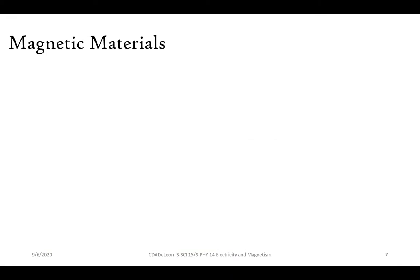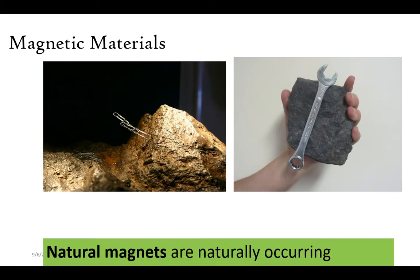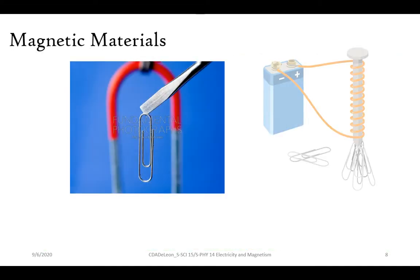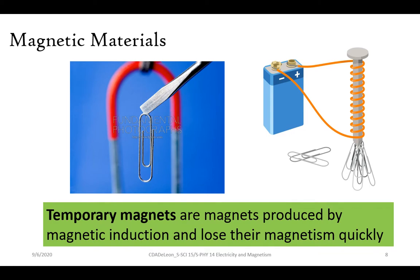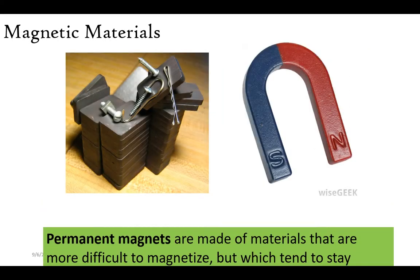We have different types of magnetic materials. First are natural magnets — they are naturally occurring substances that have magnetic properties. Temporary magnets are magnets produced by magnetic induction and lose their magnetism quickly. And permanent magnets are made of materials that are more difficult to magnetize, but which tend to stay magnetized.